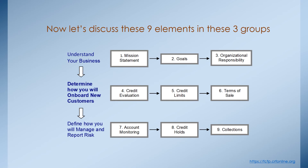Step five is credit limits. Best practice is that at the time of your credit evaluation, you also establish a credit limit and spell out how you're going to do that. You may want to think about different levels of credit limits based upon risk — customers deemed high risk should receive lower credit limits than those deemed low risk. Element six, terms of sale, is similar: consider whether you'll offer blanket terms of sale or base them on factors such as product customization or risk level, consulting with your attorneys on proper implementation.